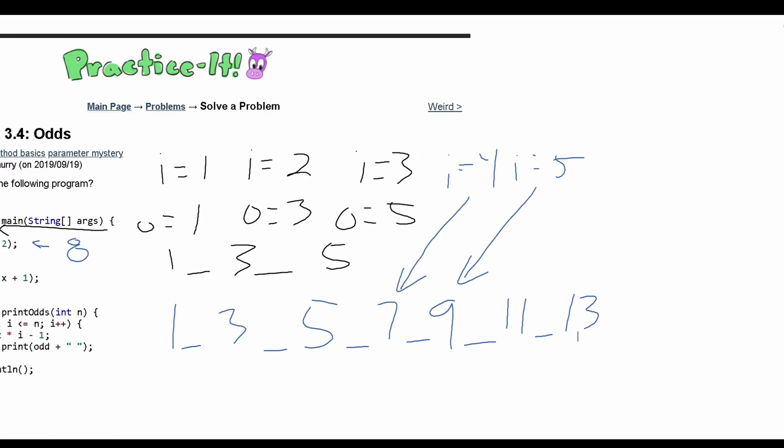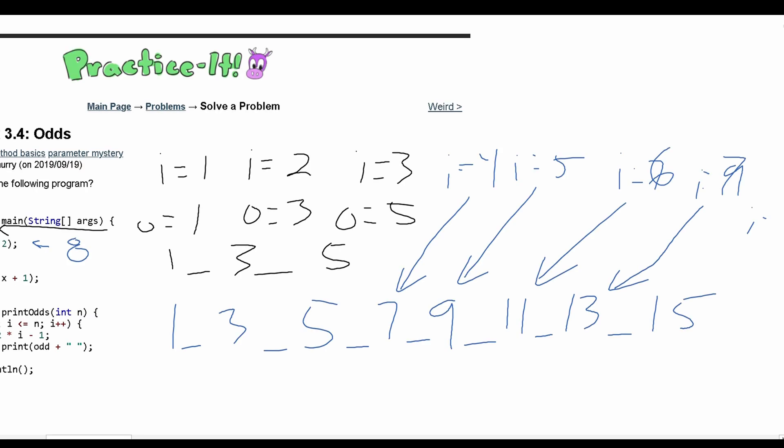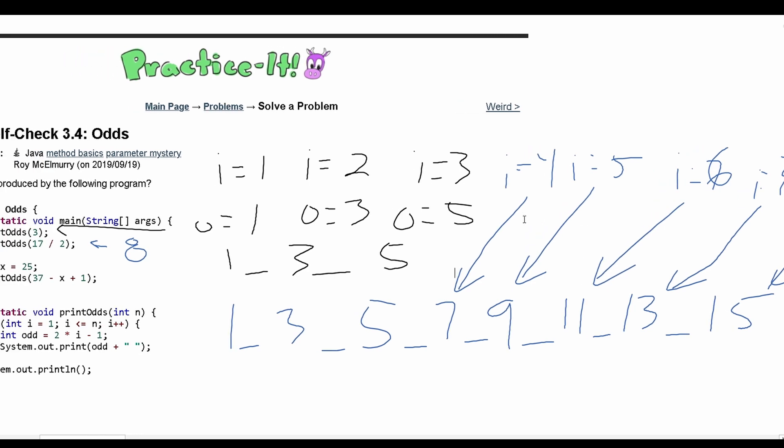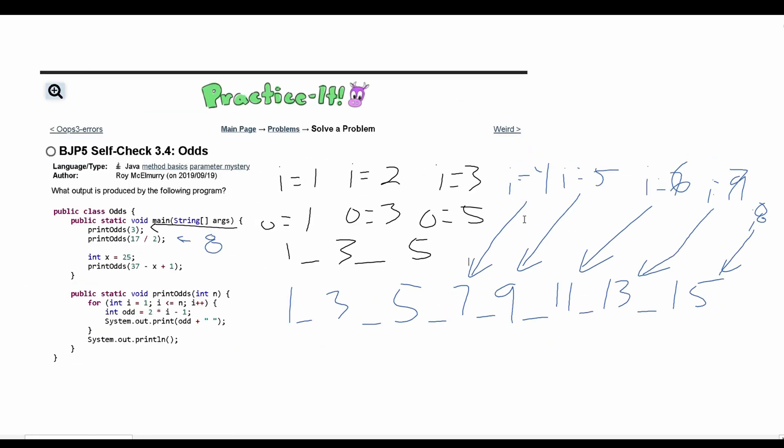And then i equals 6, i equals 7, and we have to do one more, so we have i equals 8 and that will give us 15. Again we compare these like this so we don't lose track. This should be a 6 and this is a 7, so we go here and that is equal to 8. So that is our line so far. In the first line we have 1, 3, 5, and the next line we have 1, 3, 5, 7, 9, 11, 13, 15.